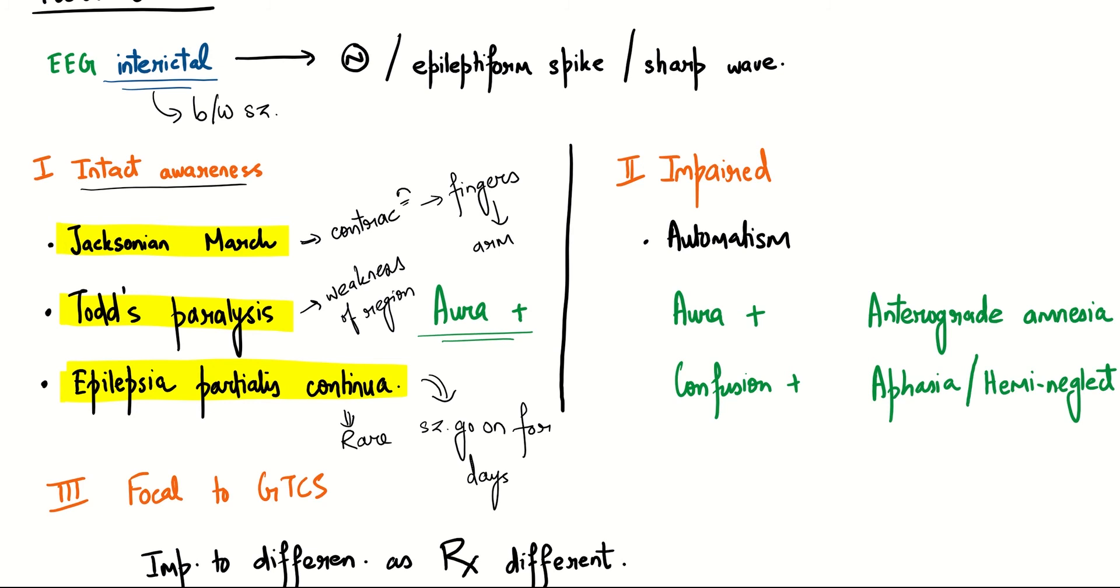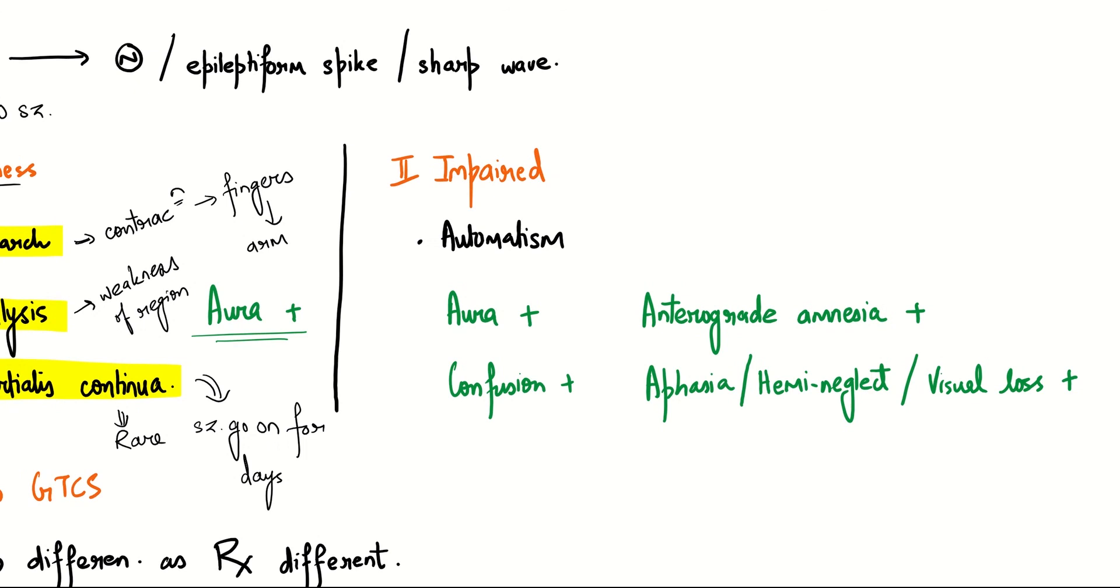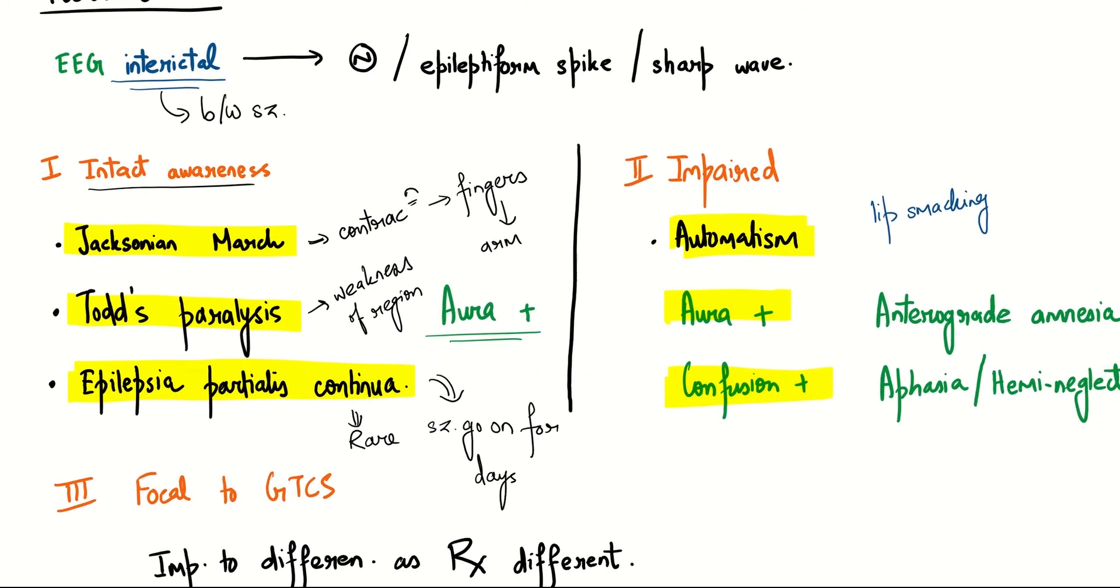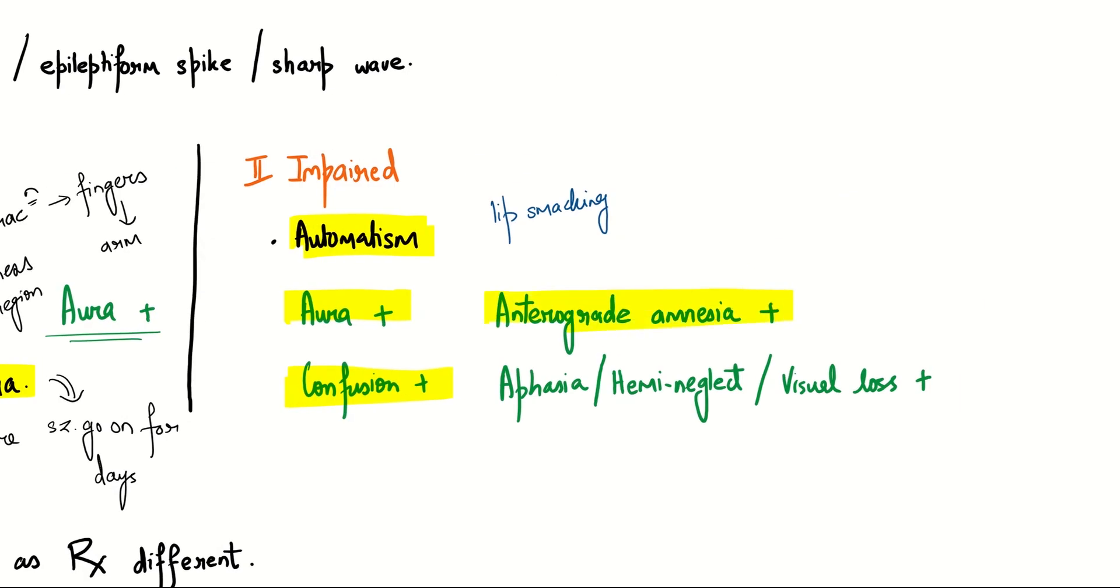Now we will differentiate it from impaired awareness, where we have the characteristic automatism. These are small movements like lip smacking or subtle repetitive movements. Here also we have aura, but we will have confusion, which was not the case in intact awareness. Anterograde amnesia will also be present, and aphasia with visual loss may also be found.